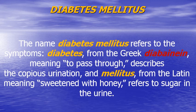The name diabetes mellitus refers to the symptoms of such condition. The word 'diabetes' comes from the Greek word 'diabinin,' meaning 'to pass through,' describing copious urination or passing of large amounts of water in the urine. The word 'mellitus' comes from Latin meaning 'sweetened with honey,' referring to spilling of sugar in the urine.